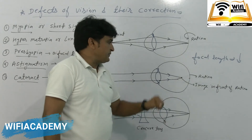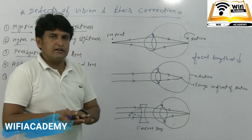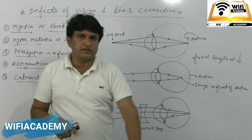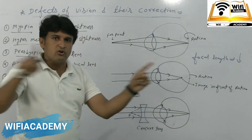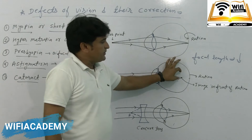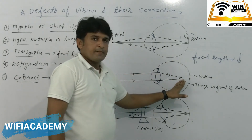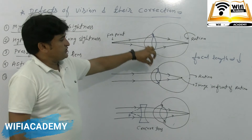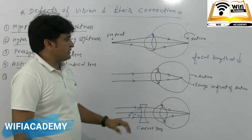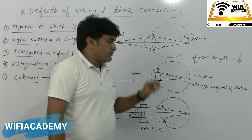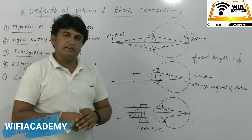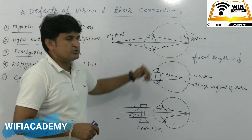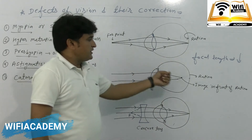The image forms in front of the retina. Because the image is not formed on the retina, the object is not seen clearly. The image is formed before the retina due to the increased curvature of the lens.